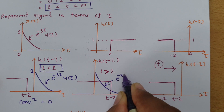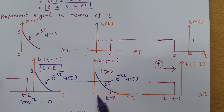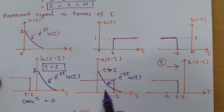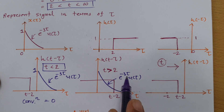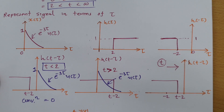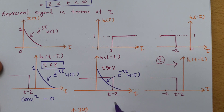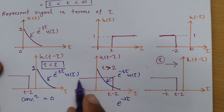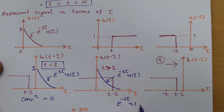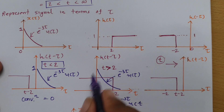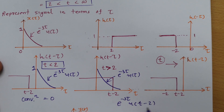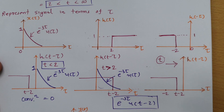For the case of t greater than 2, h(t-τ) overlaps with x(τ). The multiplication gives e to the power minus 3τ, and multiplying with unit magnitude gives u(τ). But since this is only valid for t greater than 2, we replace u(τ) with u(t-2). So the multiplication result for t greater than 2 is e to the power minus 3τ into u(t-2).